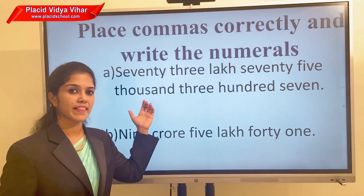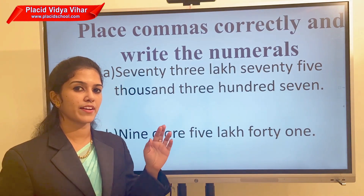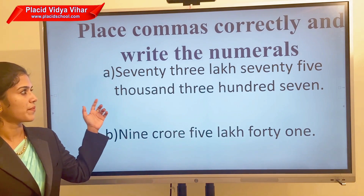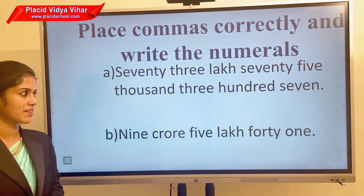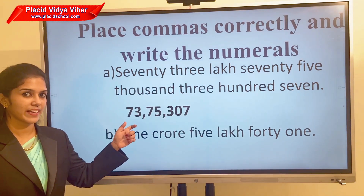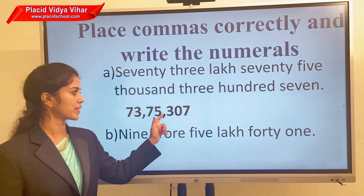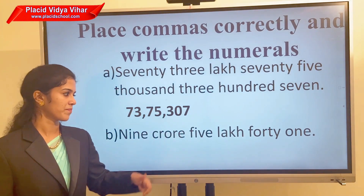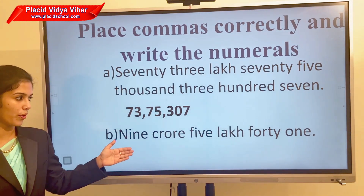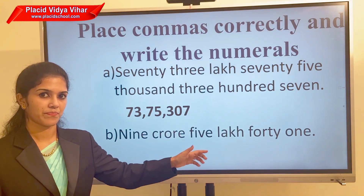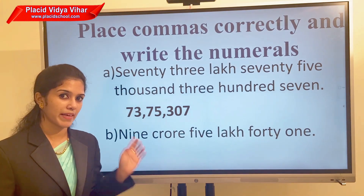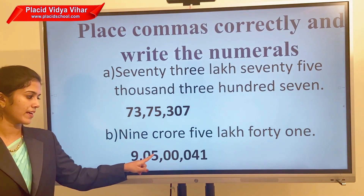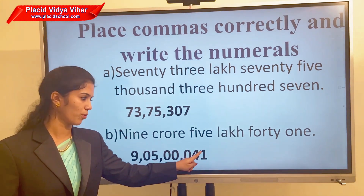Now here comes the next type of question. We already have the number name and you need to write the digits, then place the comma correctly. Your question: seventy-three lakh seventy-five thousand three hundred seven. The answer in digits with commas is 73,75,307. Next question: nine crore five lakh forty-one — in the thousands period there is no number, so make sure you write zero in the thousands place. Answer: 9,05,00,041.